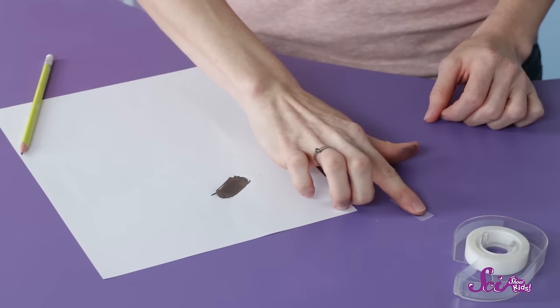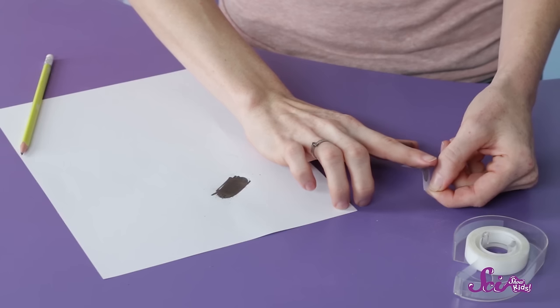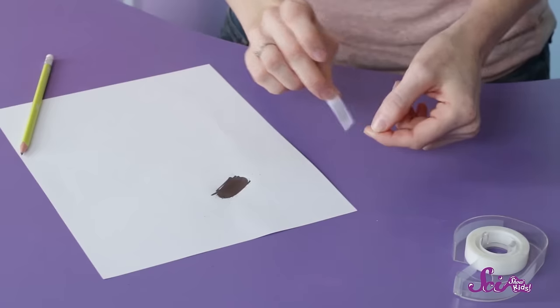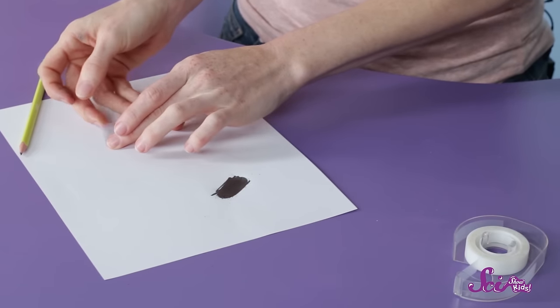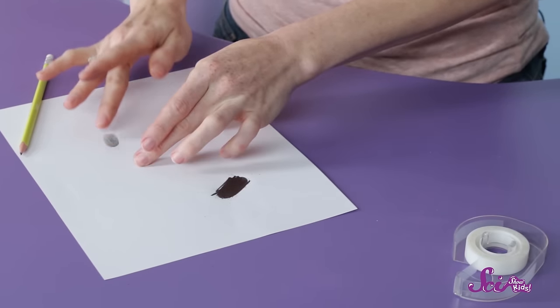Now, press your finger down onto the sticky side of the tape. Try to make sure you press straight down, so you don't smudge your fingerprint. Carefully peel the tape off, stick it onto the clean side of the paper, and smooth it out gently. Can you see your fingerprint?